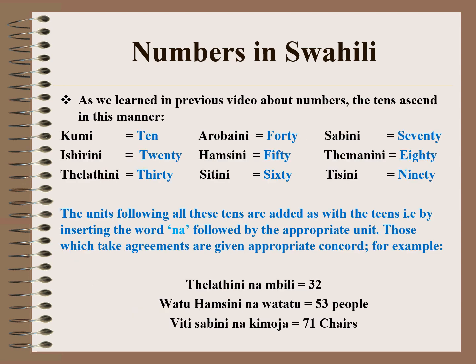As we learned in a previous video about numbers, the tens are said in this manner: Kumi means 10, Ishirini is 20, Thelathini is 30, Arubaini is 40, Hamsini is 50, Sitini is 60, Sabini is 70, Themanini is 80, Tisini is 90. The units following all these tens are added by inserting the word na, followed by the appropriate unit.